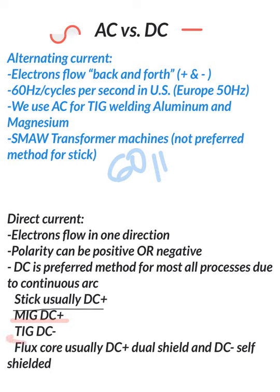Flux core is a little bit different. TIG, when in doubt, go DC negative. This is the exception, so if it's steel or stainless, nickel alloys, or any other oddball metal, copper—DC negative.